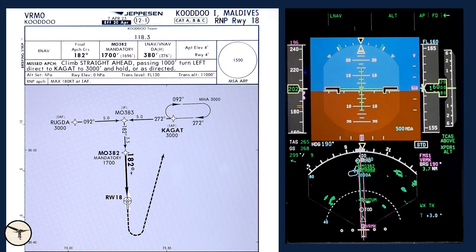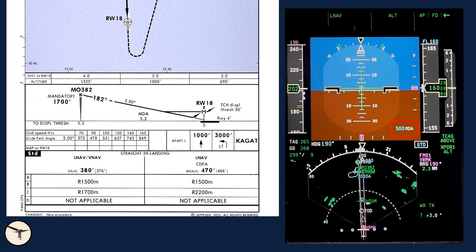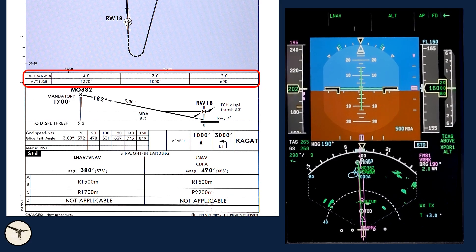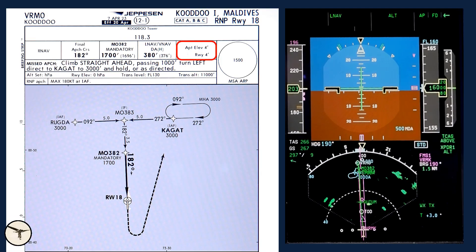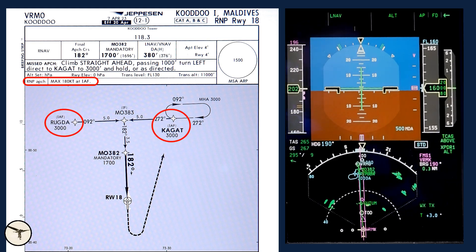Are you ready for briefing? Since we are arriving from the north, we can omit the final approach fix and head directly to the intermediate fix, Mike Oscar 383. Inbound track is only 3 degrees. Final approach fix is Mike Oscar 382, which must be crossed at 1700 feet. Minima is 470 plus 30 feet — 500. From the final approach fix, pilot monitoring will read and cross-check distance to threshold and altitude. Runway high altitude is 4 feet, MSA 1500. Missed approach: climb straight ahead; passing 1000 feet, turn left direct to Khagat to 3000 feet and hold, or as directed. Max speed 180 knots at initial approach fix.